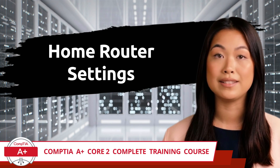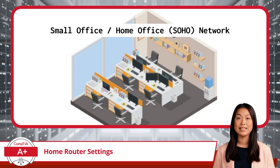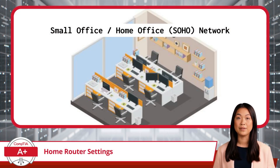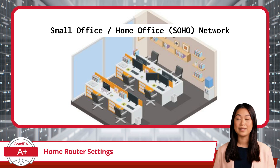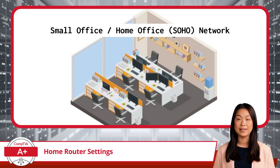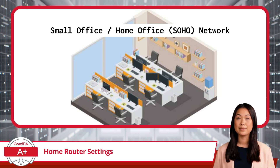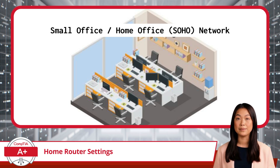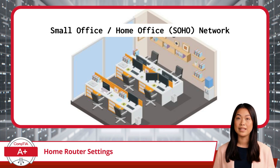Home Router Settings. When setting up or securing a small office, home office — also referred to as a SOHO network — proper security configurations are critical. It safeguards your network from unauthorized access, maintains reliable connectivity, and keeps your data secure. In this video segment, we'll explore key security settings for SOHO networks, following along with CompTIA A+ Core 2 Exam Objective 2.9.